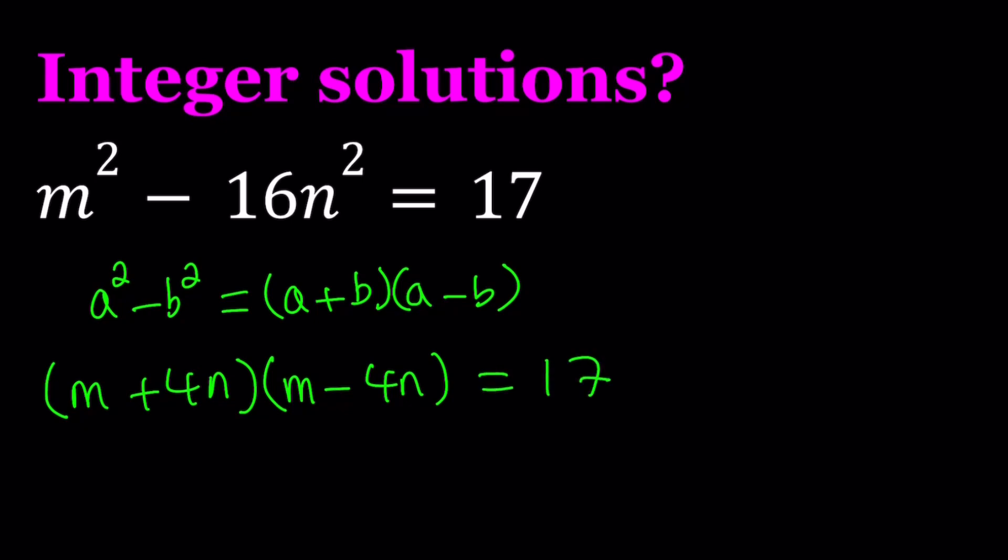Now, if m and n are real numbers, then there are infinitely many solutions, and we can solve for m in terms of n and vice versa. And by replacing m and n with certain values, whatever values you want, then you can get infinitely many solutions. For example, if n is equal to 0, m can be plus minus square root of 17. But we're looking for integer solutions, so that's why we have a finite number of solutions.